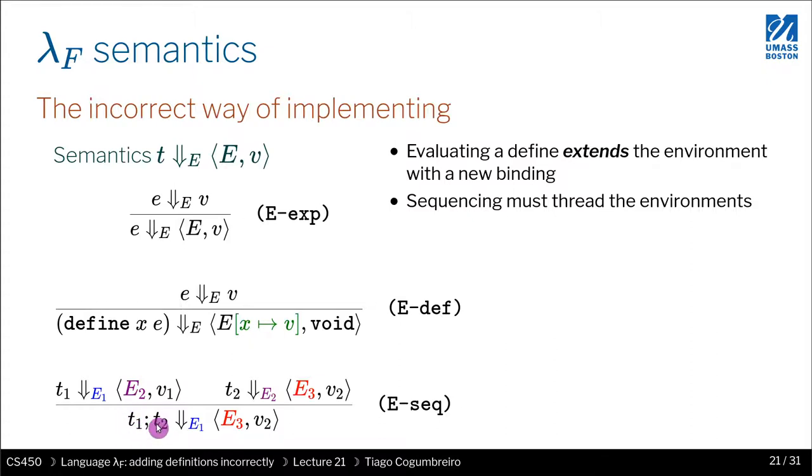What we do first is we evaluate t1 with the input environment, and here we just call it e1 just for the sake of simplicity. So we pass e1 to recursively evaluate t1 with e1.